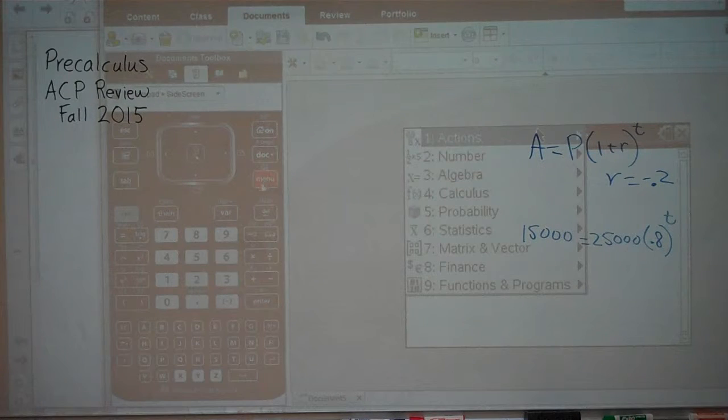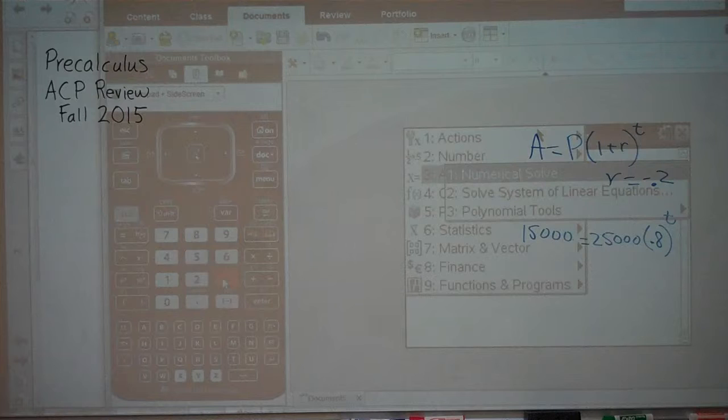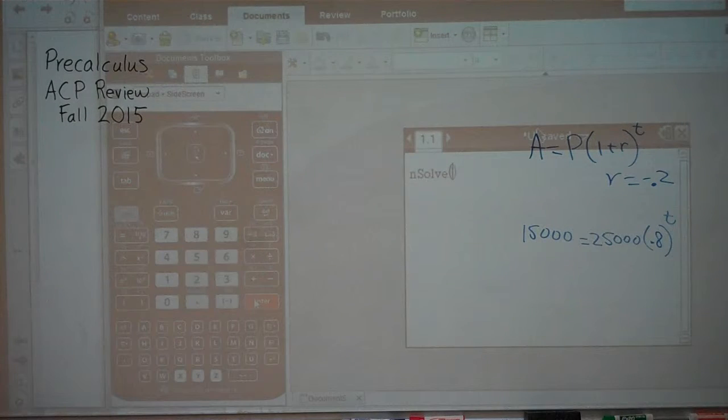To do this, numerical solve, press menu, algebra, and enter for numerical solve. We just enter the equation, 15,000, and then the equal sign here equals 25,000 times 0.8 to the power of our variable, which we'll call x, and then we come over and put comma x. Double-check to make sure everything's right. Press enter.